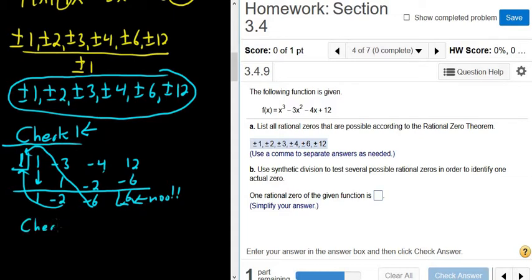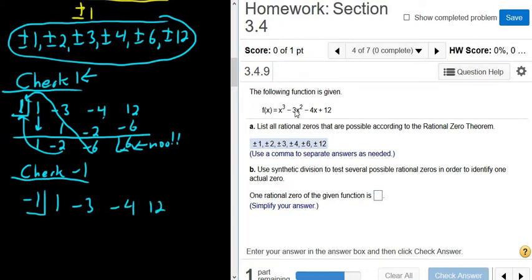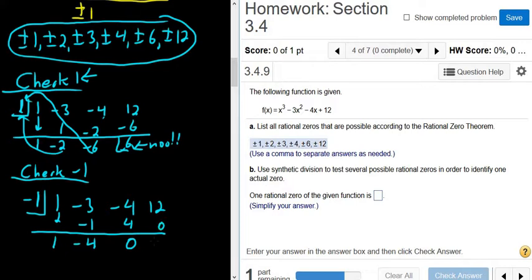Let's check negative 1. So checking negative 1, again, we write down the negative 1. And then we write down the coefficients. 1, negative 3, negative 4, and 12. Those come from here, using basic synthetic division. You draw the line. Bring down the 1. So 1. 1 times negative 1 is negative 1. We add these, we get negative 4. Multiply, you get 4. Add these, you get 0. Multiply, you get 0. No! Fails again.